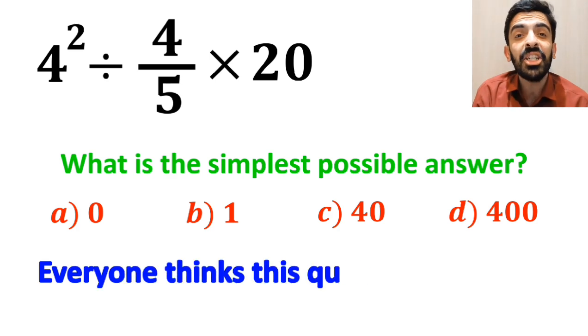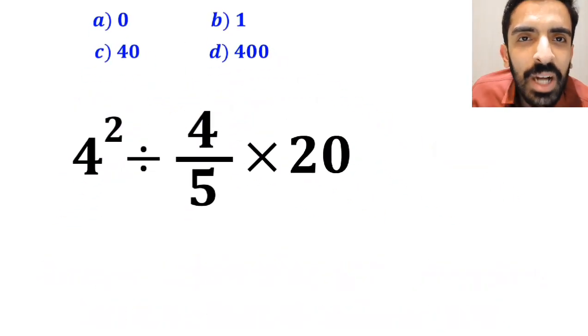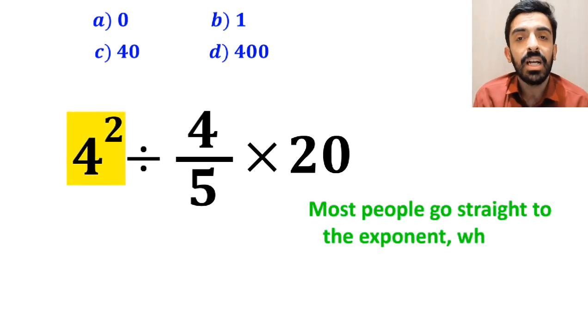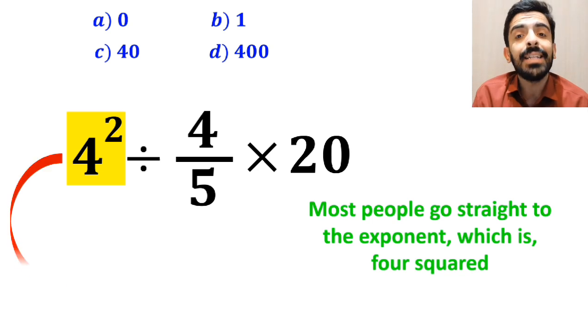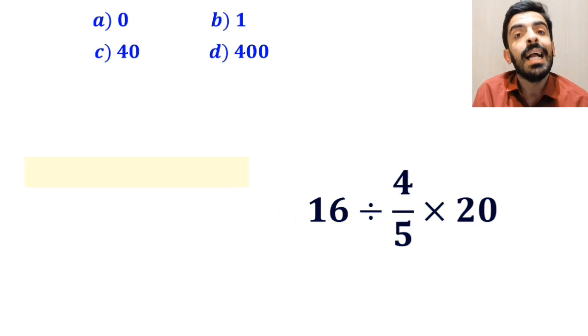Everyone thinks this question is so easy but it confuses almost everyone. Let's dive in and break it down step by step together. In the first step to solve this question, most people go straight to the exponent which is 4 squared, and they write this expression as 16 divided by 4 over 5 multiplied by 20.